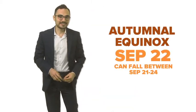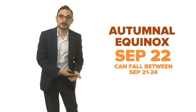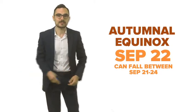Happy fall. The autumnal equinox happens on September 22nd this year. The date can vary anywhere between the 21st and the 24th of September.